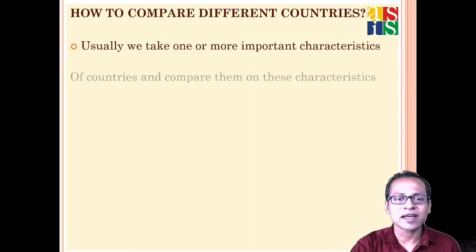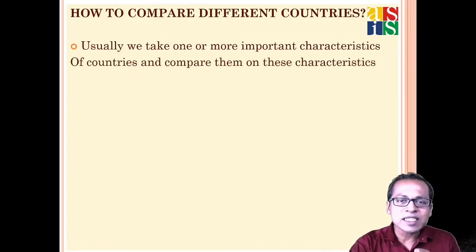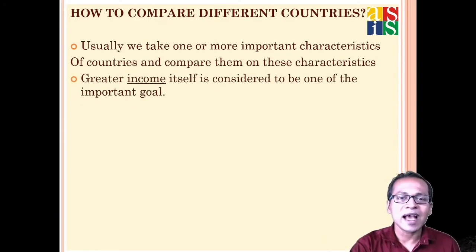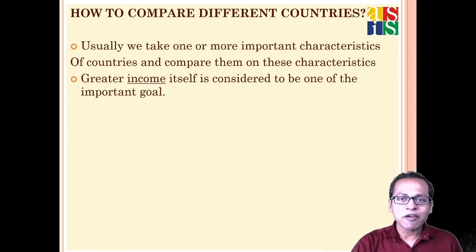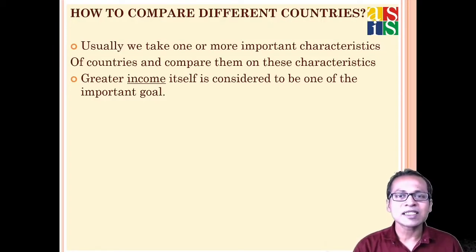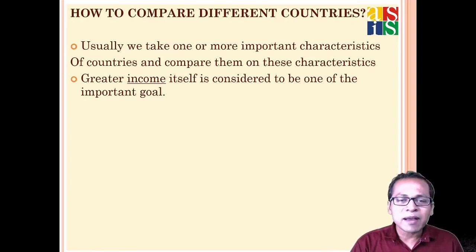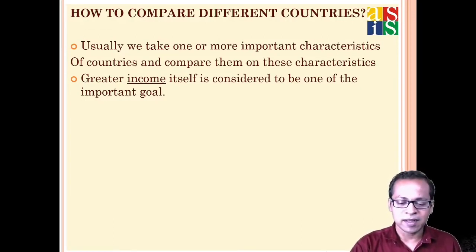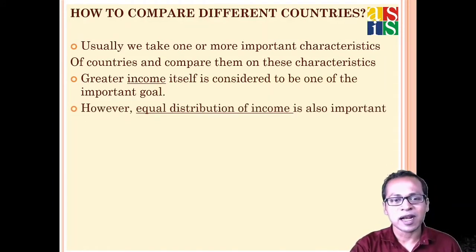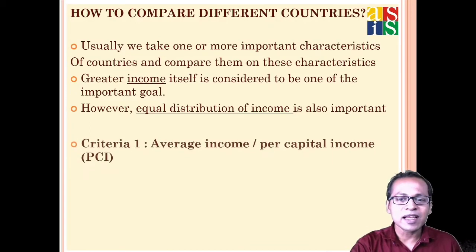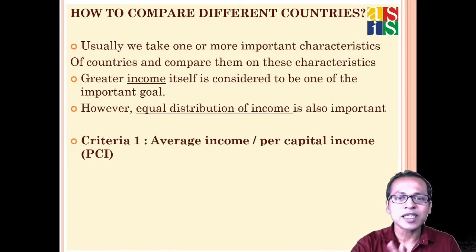If we want to compare the level of development between countries, we need a few important criteria. Income is a very important criterion because if you have more income, you can generally afford good medical facilities and education, raising the living standard of your people. However, income must be distributed equally.